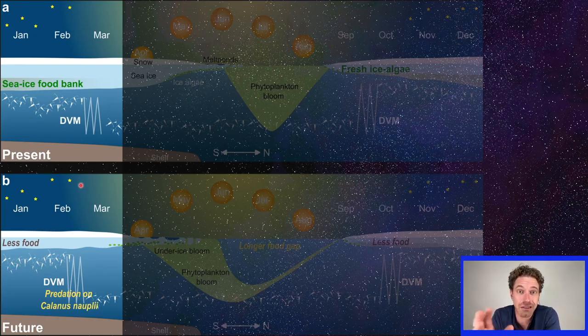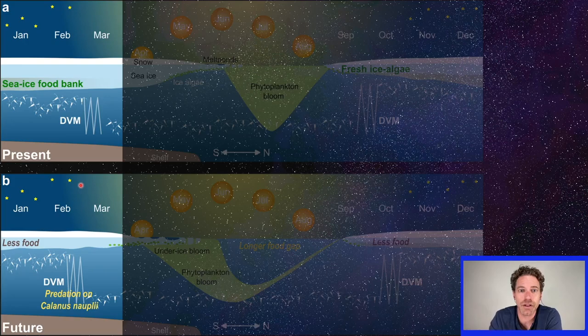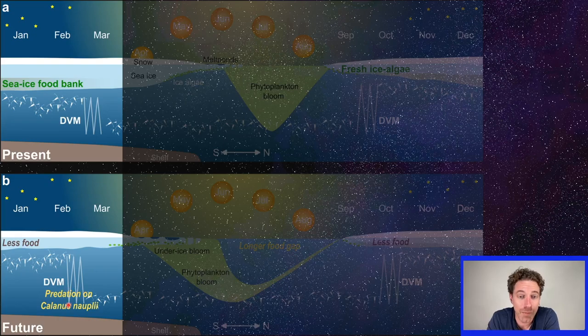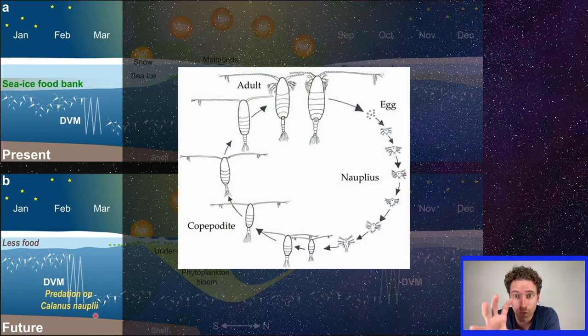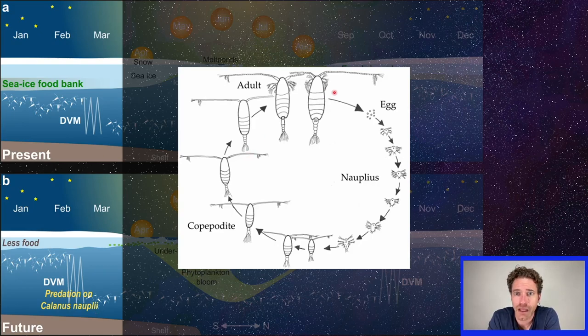And as a result of that, when the season changes and there starts to be a little bit of light out and they begin this diel vertical migration, those copepods then become predators on Calanus naupli. And so this is a nice little graph, really just the life cycle of that zooplankton, the copepod. And the nauplius is basically the juvenile stage of that copepod and its life cycle.